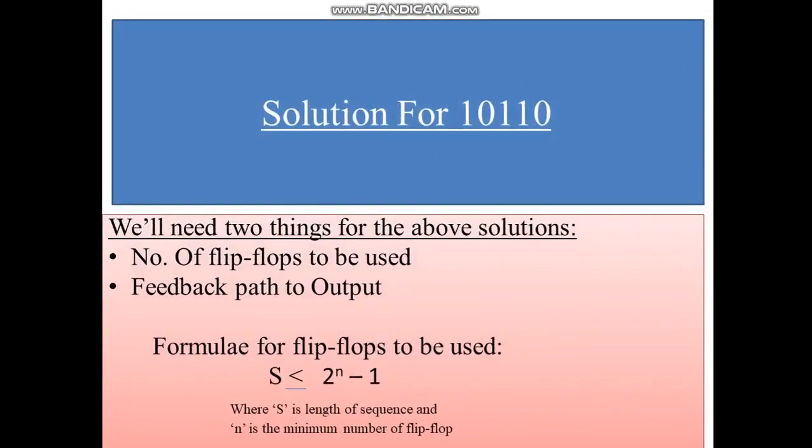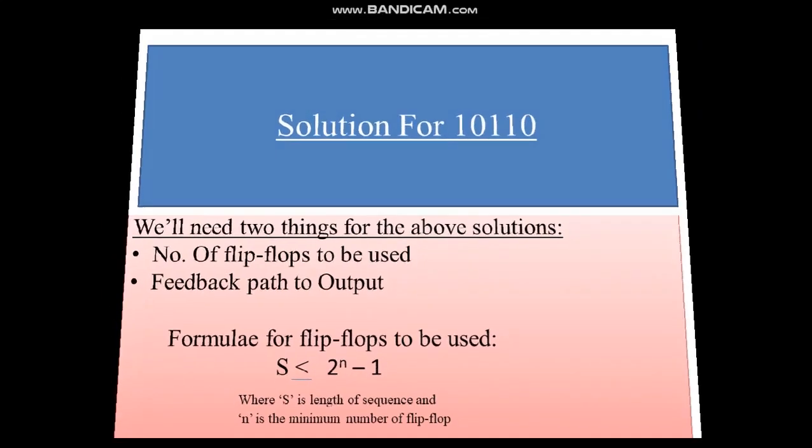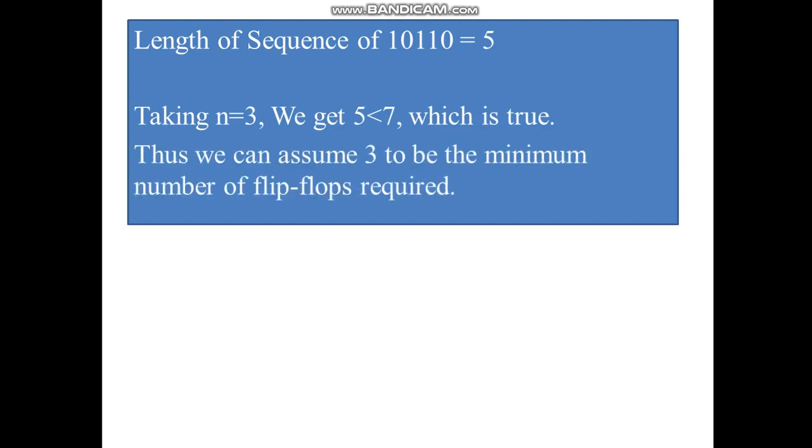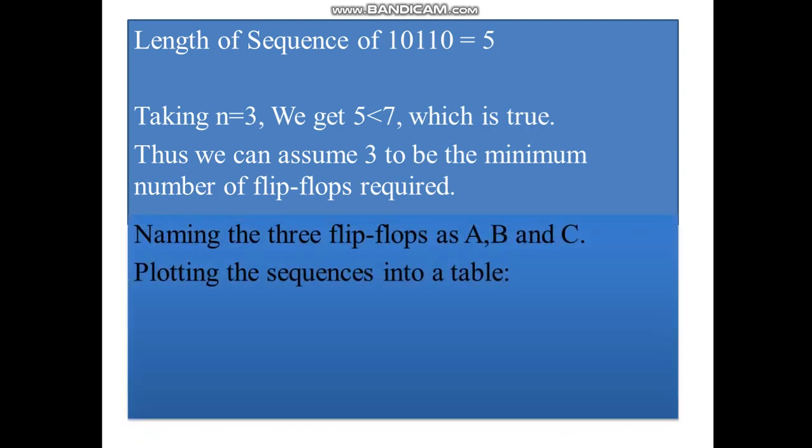Solution for 10110 would be getting number of flip-flops to be used and the feedback path to the output. Formula for the flip-flops to be used is: S is supposed to be smaller or equal to 2 to the power of n minus 1, where S is the length of sequence and n is the minimum number of flip-flops. Here, length of sequence for 10110 is equal to 5 bits. Taking n equals to 3, we get 5 smaller than 7, which is true. Thus, we can assume 3 to be the minimum number of flip-flops required. We will name the flip-flops as A, B and C.